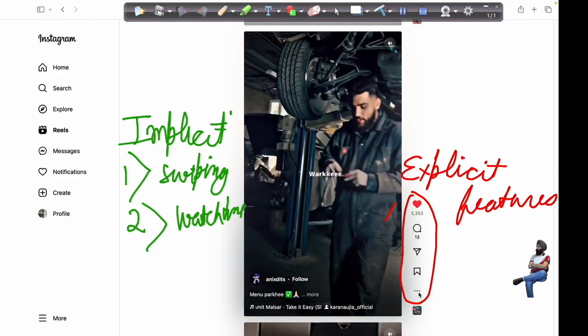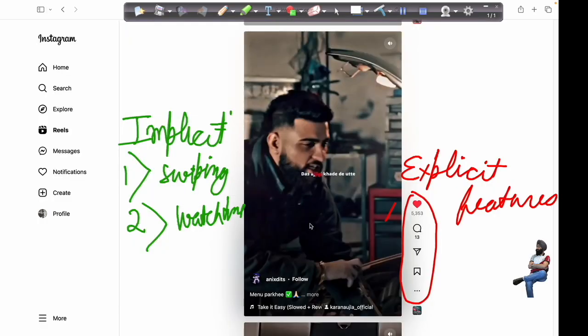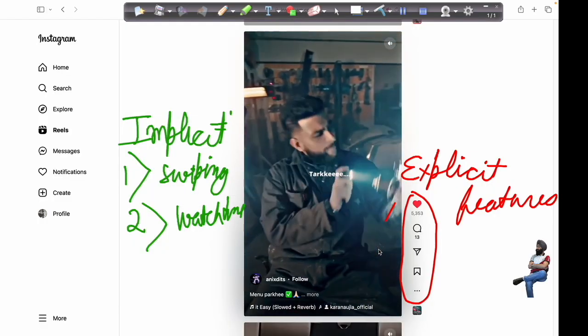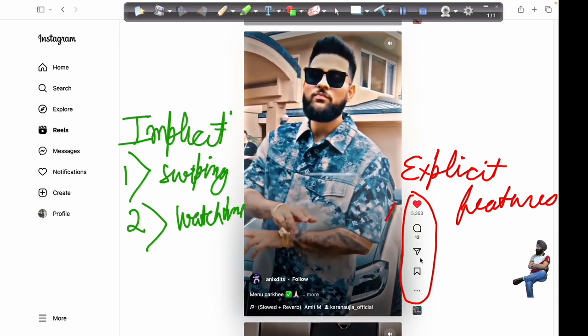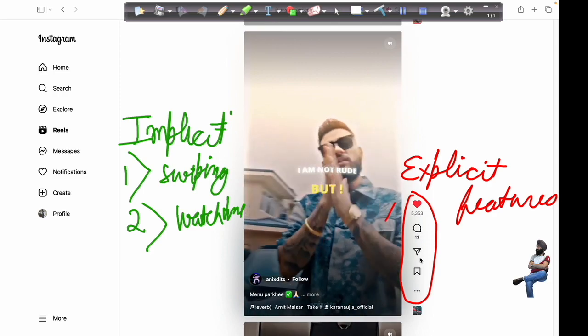Whenever you are liking the content you can simply like it. And if you're not engaging with it you can simply report it. These are the explicit features, and also commenting and sharing. These also have a strong correlation with liking the content.